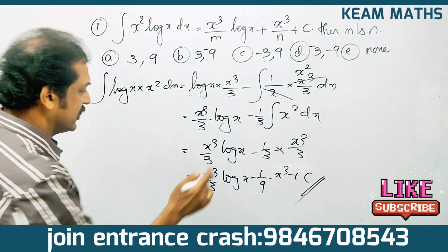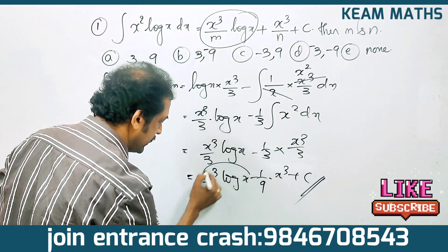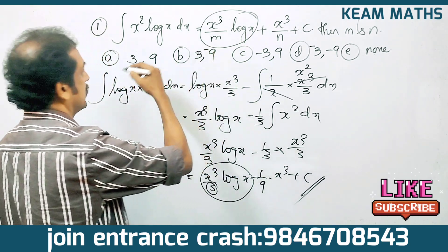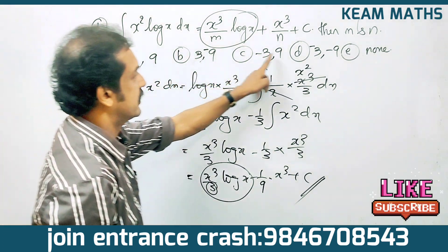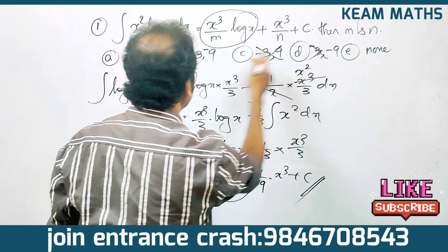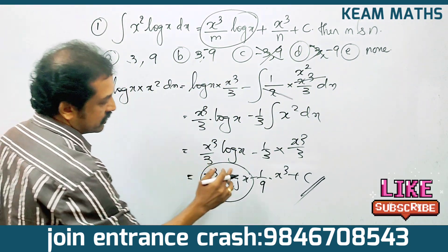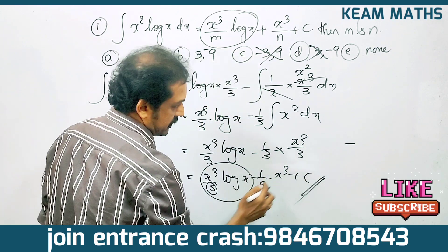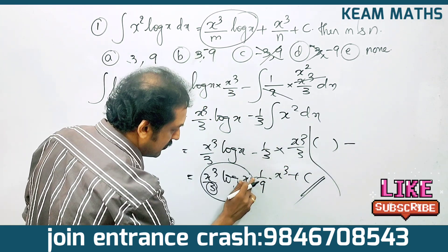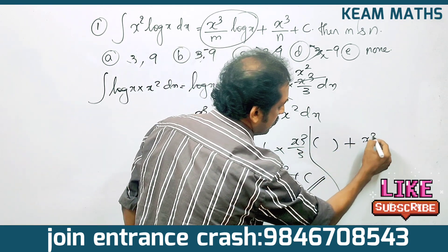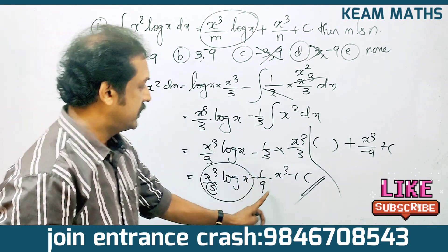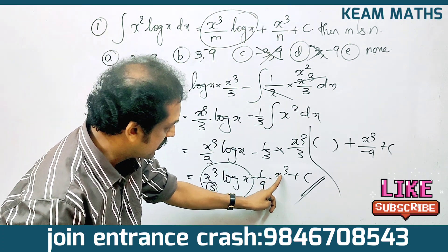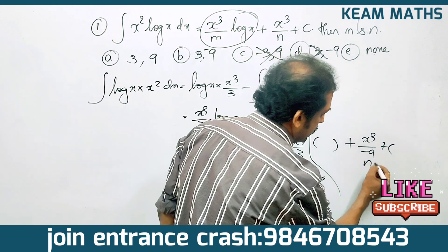Comparing this with the given form x³ log x by m plus x³ by n plus c, we get m equal to 3. And since the second term is minus x³ by 9, n is equal to minus 9. So m equals 3 and n equals minus 9.